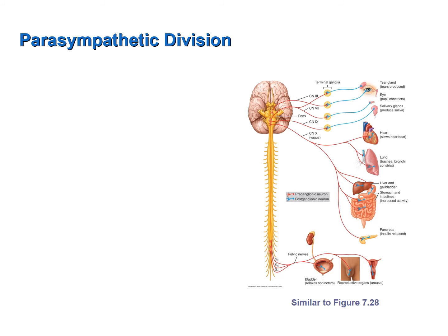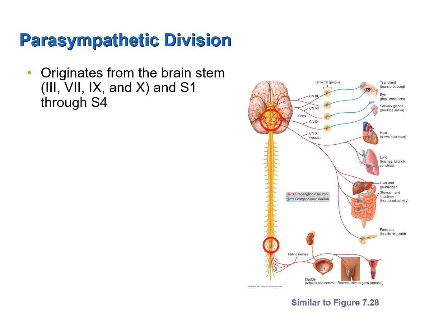Now let's discuss the anatomy of the parasympathetic division. The preganglionic motor neurons are found in the central nervous system, either in the brain stem or in the sacral region of the spinal canal. Preganglionic fibers exit the brain stem in four cranial nerves. In fact, 80% of parasympathetic nerve fibers are found in the vagus nerve (cranial nerve 10), controlling involuntary organs in the head, neck, thoracic, and abdominal regions. Preganglionic fibers also exit the sacral spinal cord to control involuntary organs of the pelvis.